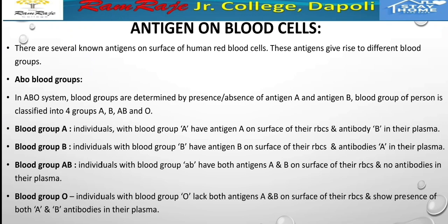The first is blood group A. Individuals with blood group A have antigen A on the surface of their red blood cells and antibody B in their serum.